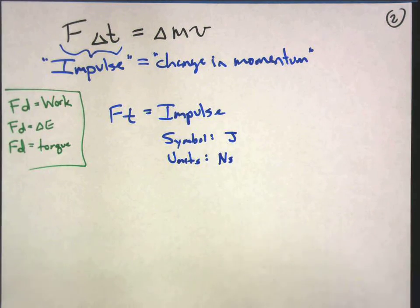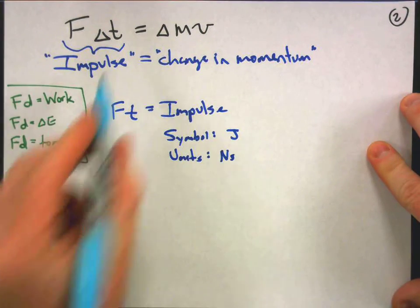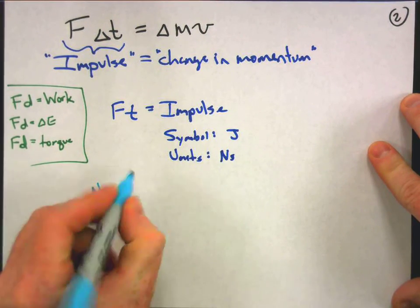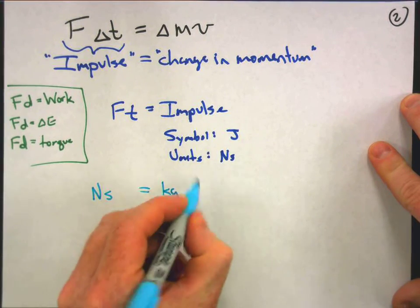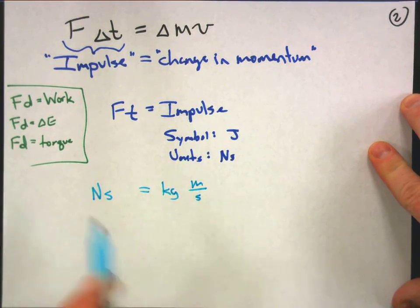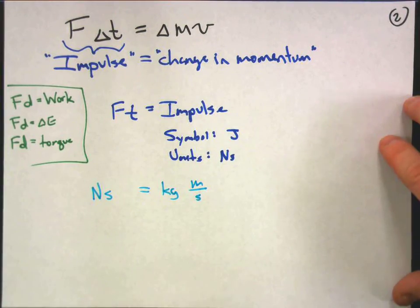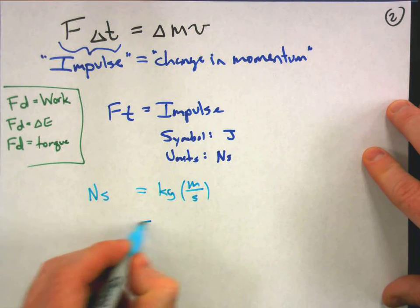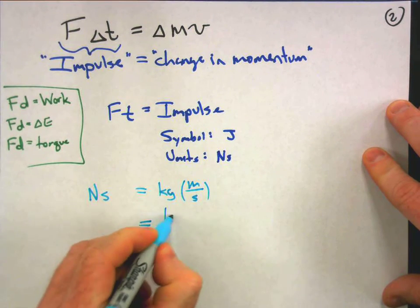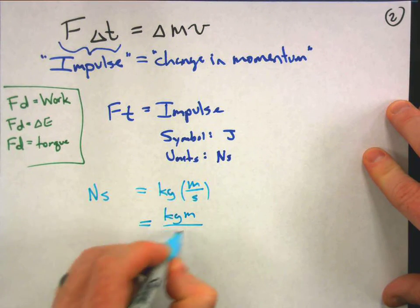So if impulse equals change in momentum, then the units must be the same. Are they the same? Let's check that out. We have impulse as newtons times seconds, and here we have mass times velocity, masses in kilograms and velocity is meters per second. The delta here has no units, it's just signifying there's a change in something. So this one's easy, this is going to be kilogram meters per second.